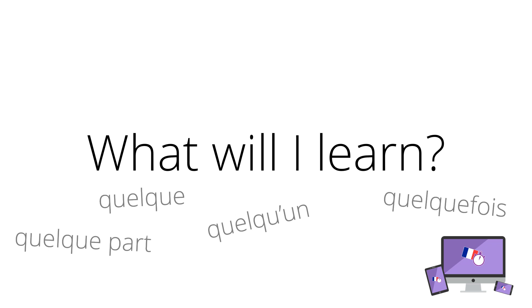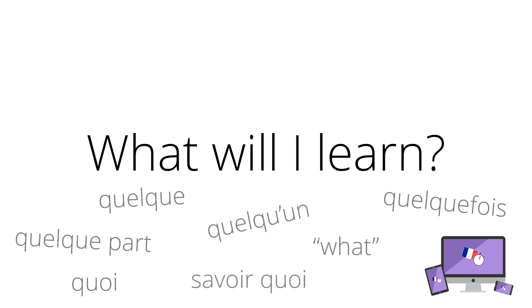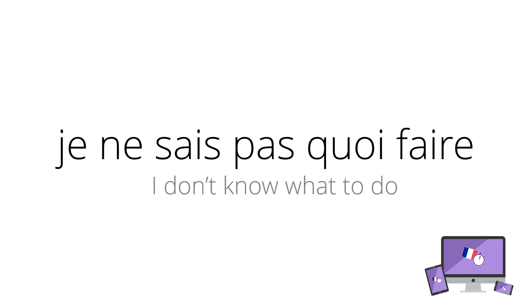We'll have another quick recap of the many different ways to say 'what' in French, and we'll meet another word: quoi. You can use quoi to mean 'what' with the verb savoir, which means 'to know.' Je ne sais pas quoi faire — I don't know what to do. So as you can see, you can use quoi in front of infinitives.